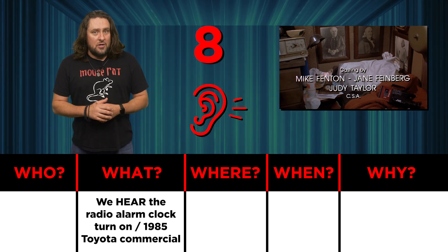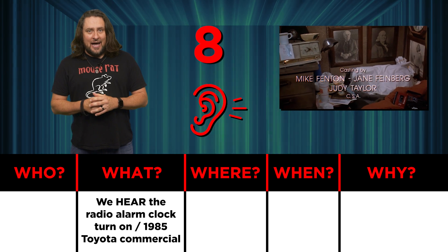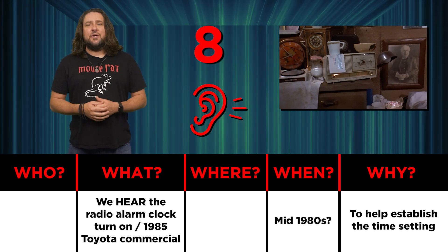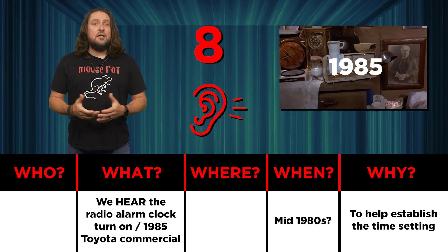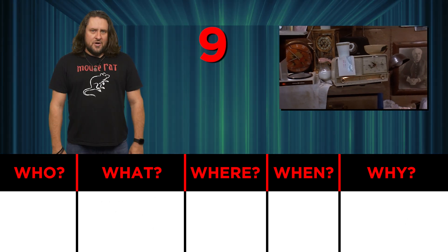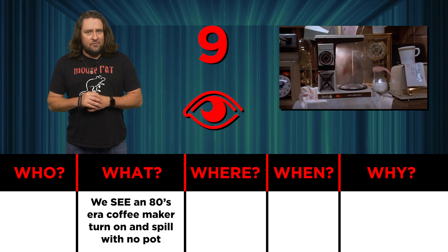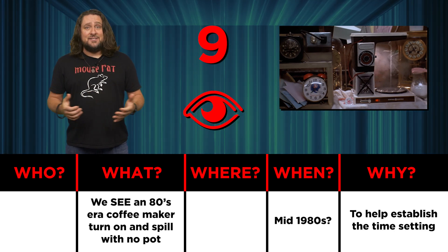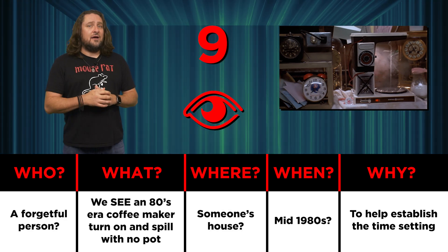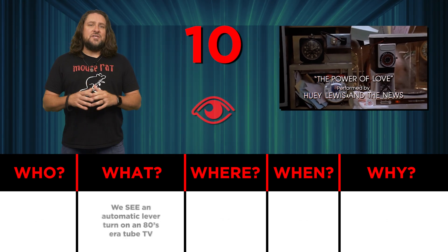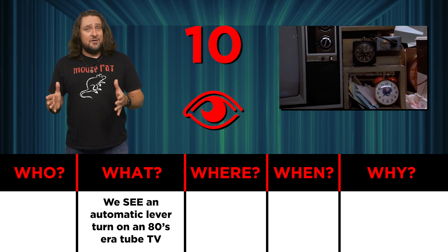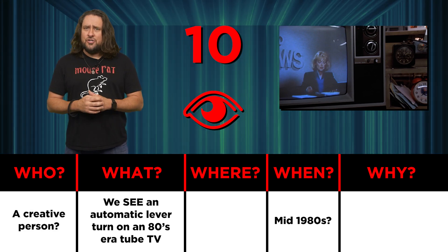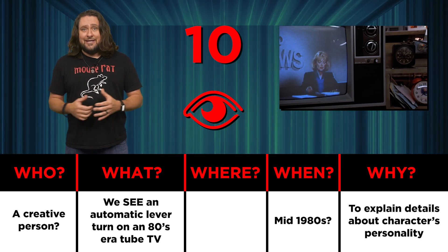Number eight, we hear the radio alarm clock turn on with a commercial about the new 1985 model Toyotas. That helps to further establish the time setting in the mid-80s. The director Robert Zemeckis could have easily shown us the year with text on screen right after the main title, but he clearly wanted to do it in a more organic way. Number nine, we see an 80s-era coffee maker turn on by itself and spill because there's no coffee pot underneath. Aside from adding credibility to our 1980s time frame theory, it also might suggest that the person who lives there is forgetful or absent-minded. Number ten, we see a homemade Rube Goldberg style invention where a clock lever turns on the power to an old tube television, raising questions about who would design something like that and suggesting he or she has a creative imagination.